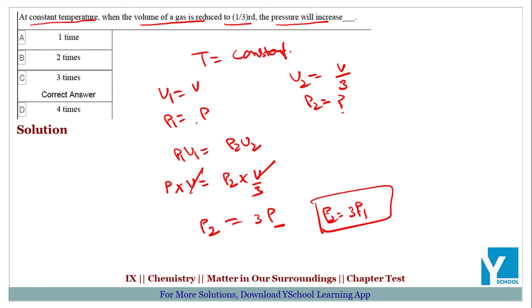Because P equals P1. Toh, jo P2 hai, woh 3 times ho jayega P1. So the answer is, it becomes 3 times. Answer is C, that is 3 times.